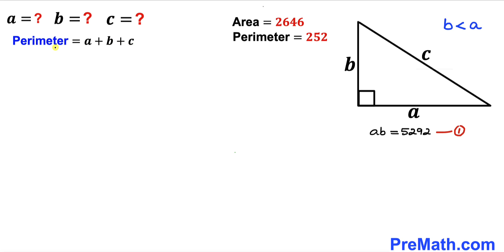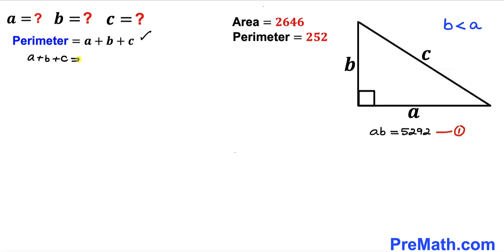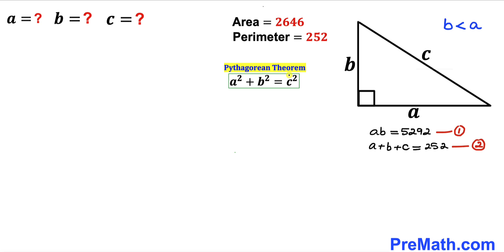Now let's recall the perimeter. The perimeter is the sum of all boundary lengths, so the perimeter equals A plus B plus C. In our case the perimeter is 252, so A plus B plus C equals 252. Let's call this equation number two.